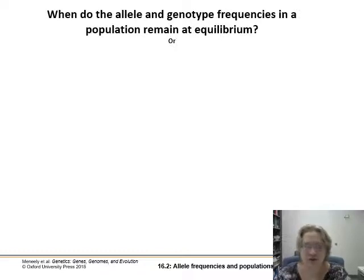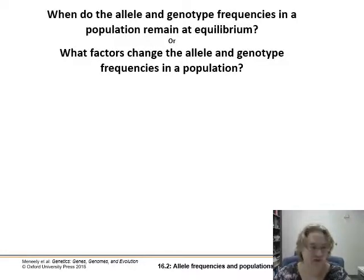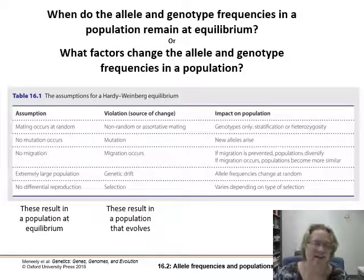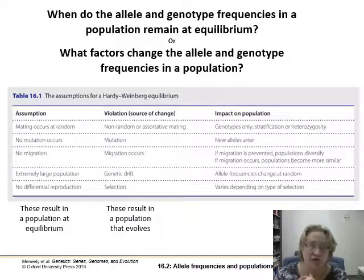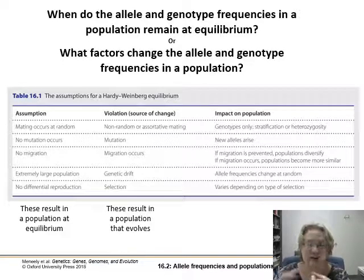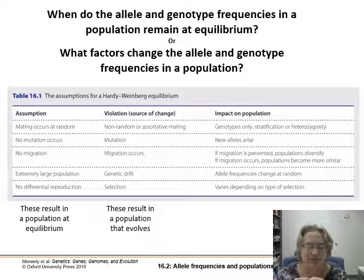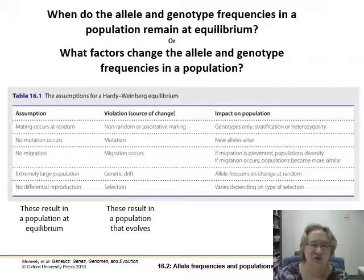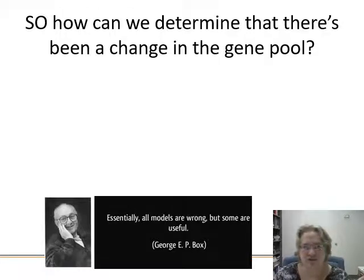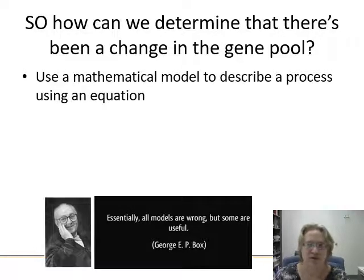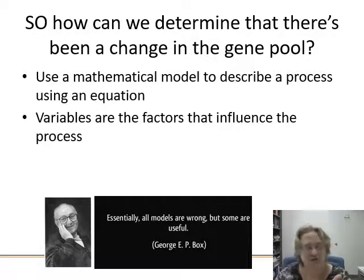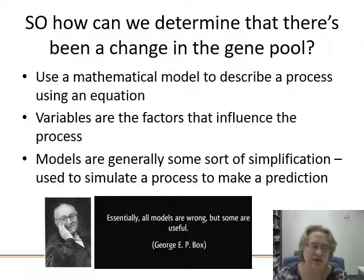So when do allele or genotype frequencies remain at equilibrium, or what factors change allele and genotype frequencies in a population? The assumptions for Hardy-Weinberg: in order for nothing to happen, mating must be random, no mutation, no migration, extremely large population, no differential reproduction. A violation or source of change where evolution is happening includes non-random assortive mating, mutation, migration, genetic drift, and selection working on your population. These are the five major claims of Hardy-Weinberg.